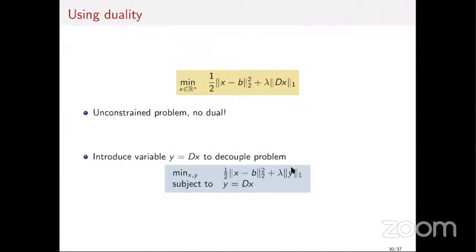This is my original problem. I'm going to introduce an artificial variable y that plays the role of Dx, creating a constrained problem. I have to impose that y = Dx. This is a convex optimization problem, so I can compute its dual, and I know strong duality holds because my objective is convex and Slater's condition is satisfied — my objective function is defined everywhere.